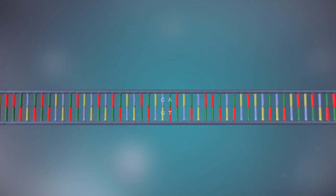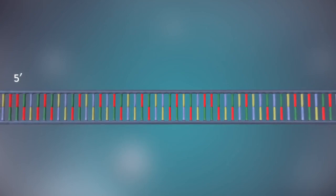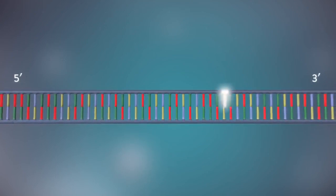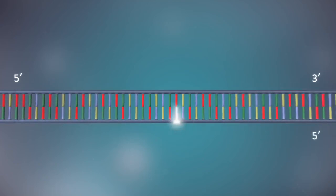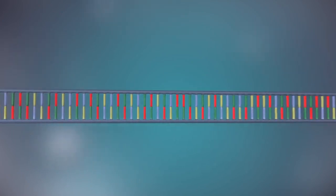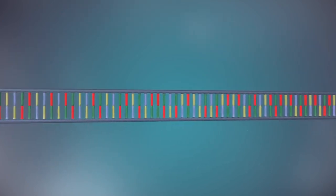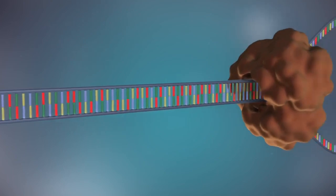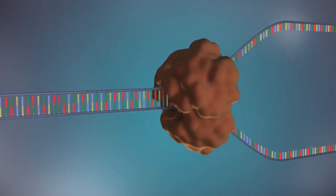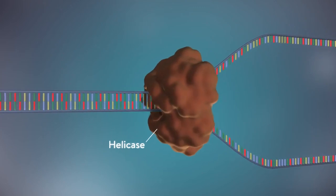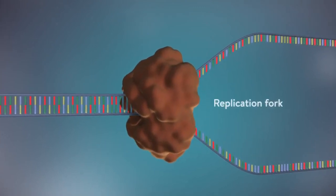Each strand has a five prime end and a three prime end. The two strands run in opposite directions. This determines how each strand of DNA is replicated. The first step in DNA replication is to separate the two strands. This unzipping is done by an enzyme called helicase and results in the formation of a replication fork.